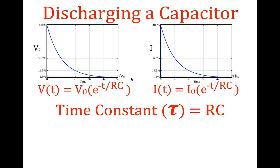Because the time is given in time constants, for any combination of resistor and capacitor, after one time constant, the voltage across the capacitor will be reduced to 36.8% of the initial maximum. The current will also be reduced to 36.8% of the initial maximum current, and so on for one, two, three, four, five time constants: 36.8, 13.5, 5, 1.8, and 0.7%. We usually stop at five time constants because that's when we consider the capacitor to be fully discharged.